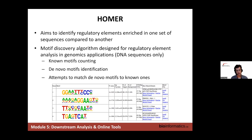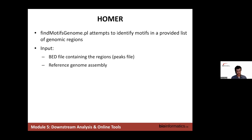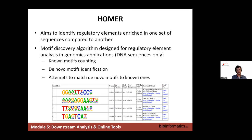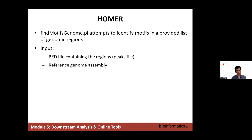For motif detection we'll use Homer, a command-line tool running on your AWS instance. The goal of Homer is to identify regulatory elements enriched in one set of sequences compared to another. It has its own database to identify known motifs and can also identify de novo motifs. The specific tool we will use is findMotifsGenome, with two inputs: a BED file containing the regions of interest — the peak file — and the reference genome assembly.